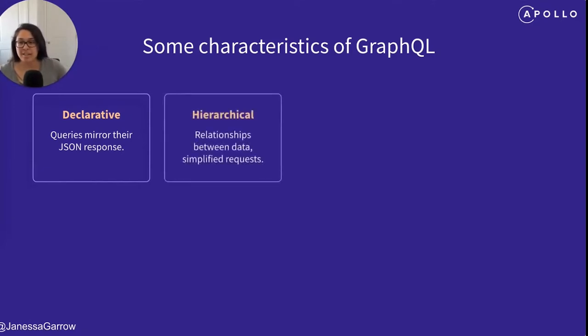Next, GraphQL is hierarchical. The hierarchical nature of GraphQL allows for relationships between different kinds of data, simplifying requests by avoiding multiple REST endpoint requests or complex SQL join statements.